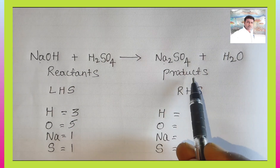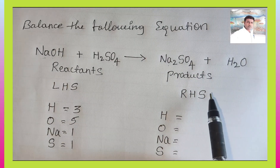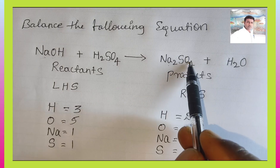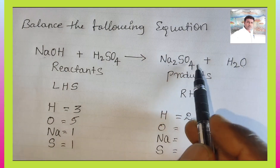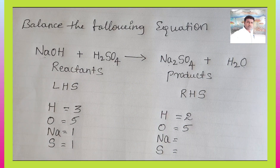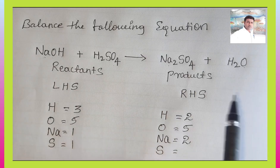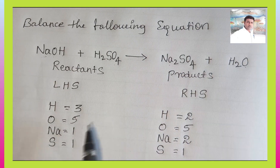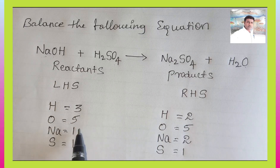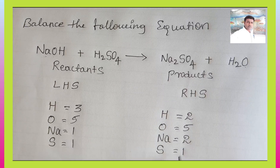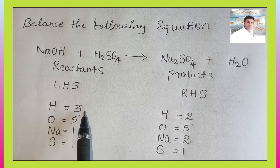On the RHS (product side): hydrogen atoms — there are 2 hydrogen in water, write 2. Total oxygen atoms on the right side: Na2SO4 has 4 oxygen, and water has 1 oxygen, so 4 plus 1 equals 5 oxygen atoms. Sodium: Na2 means 2 sodium atoms — write 2. Sulfur: 1 sulfur atom. Checking balance — LHS hydrogen 3, RHS hydrogen 2: not balanced. LHS oxygen 5, RHS oxygen 5: balanced. LHS sodium 1, RHS sodium 2: not balanced. LHS sulfur 1, RHS sulfur 1: balanced. So oxygen and sulfur are balanced, but hydrogen and sodium are not balanced.